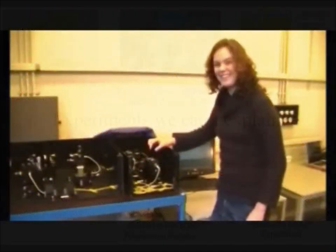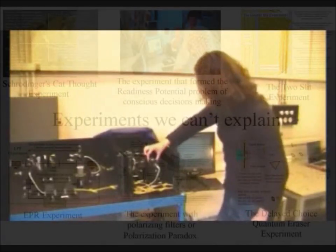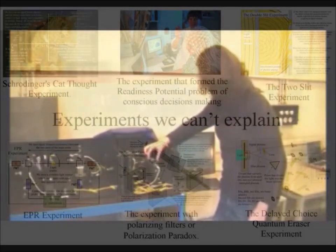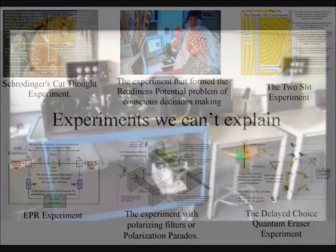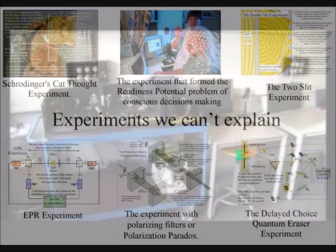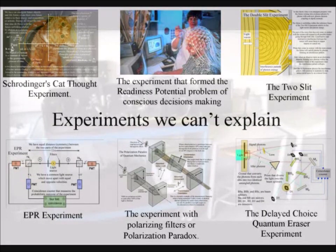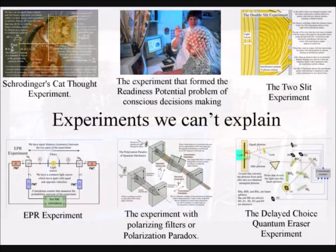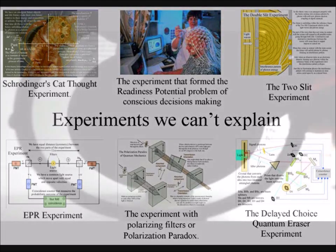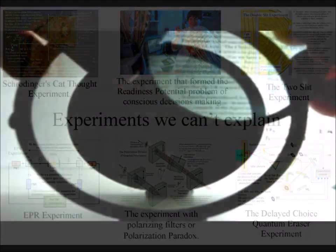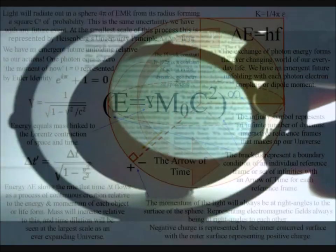I will place links below that explain how this emergent process can give us a logical understanding of the two-slit experiment, the delayed choice quantum eraser experiment, the EPR experiment, and the polarization paradox with visible light and microwaves.